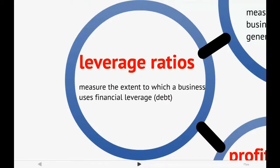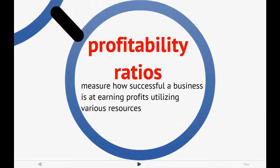Leverage ratios — where leverage is simply a fancy word for debt — look at how well a firm uses its debt. Most companies usually have some type of loan outstanding and we're trying to look at how effectively they utilize that particular leverage. And the last category is profitability ratios, which simply measure how successful a business is at earning profits, typically addressed in a percentage format comparing profit to existing resources.